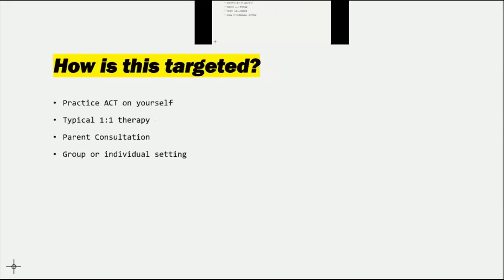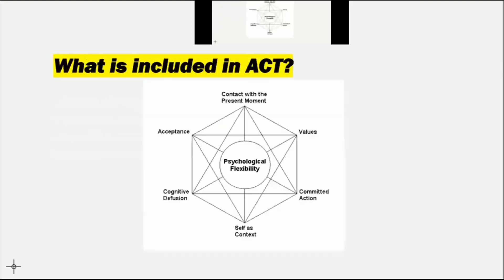How is this targeted with ACT? My personal recommendation is to ensure that one can fully implement ACT on themselves in order to have a full understanding of if this is even something they would want to implement in practice. Using ACT on oneself would be a good place to start. ACT is also used in a more typical one-to-one therapy setting, as well as parent consultation or more group and individual settings. There's some flexibility with how ACT is delivered and what the overall purpose or end goal for ACT is.